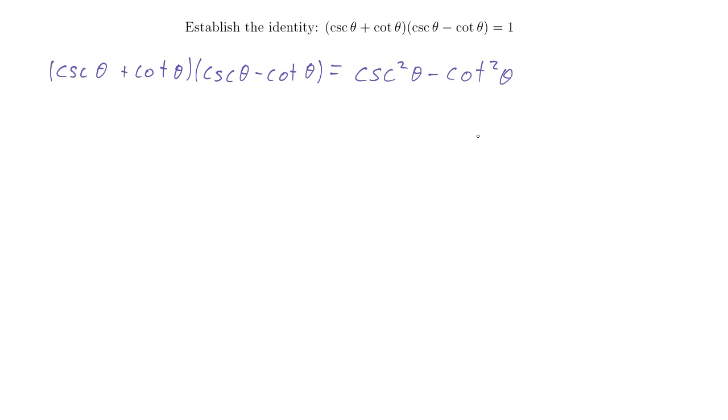So if you're really good with your Pythagorean identities, you will recognize this is actually just 1. So we'd be done. And this is because we have that identity cotangent squared theta plus 1 equals cosecant squared theta. And if you subtract cotangent squared theta from both sides, you get this, and that's equal to 1.